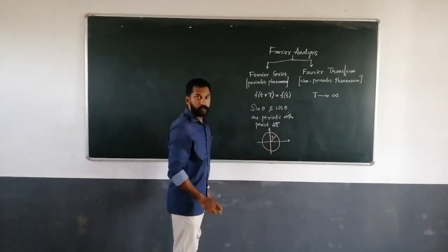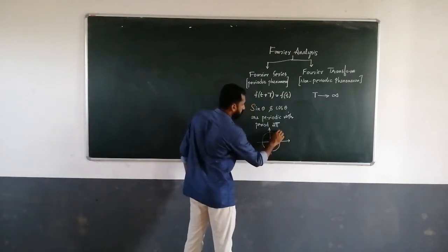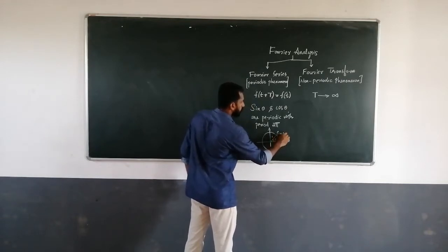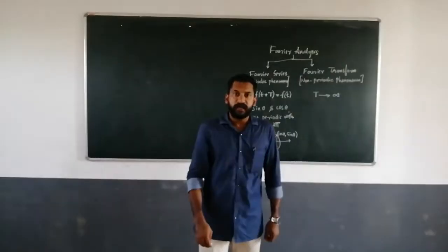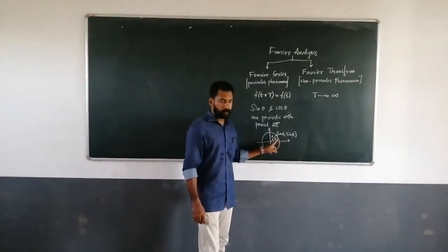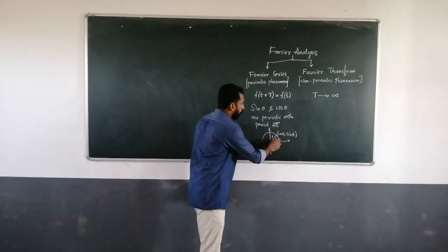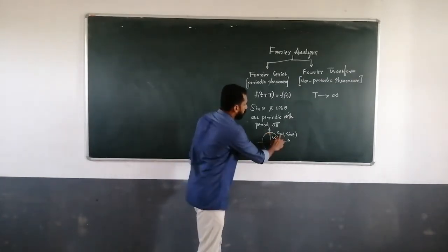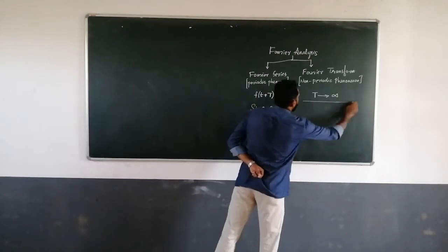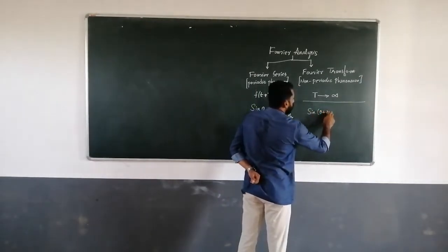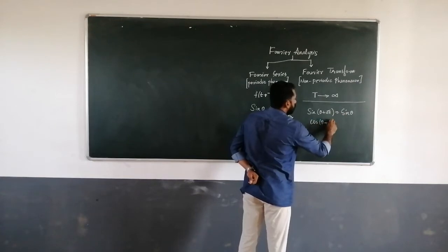Consider a circle of radius one. Then suppose the angle is θ. We can define the x-coordinate of this point as cos θ, while the y-coordinate is sin θ. So after a period of 2π, we will come to the same point. Therefore sin(θ + 2π) = sin θ and cos(θ + 2π) = cos θ.